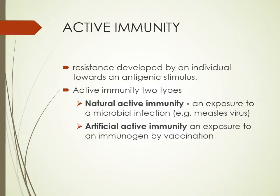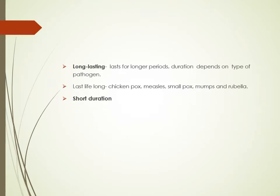Active immunity is of two types: natural and artificial. Natural active immunity means exposure to a microorganism activates your immune system, resulting in antibody formation. Artificial active immunity means a pathogen has been introduced artificially — as in vaccination, where we introduce part of the pathogen, killed or attenuated — and your immune system gets activated. In both cases your immune system is playing an active role. Depending on the type of pathogen, the immunity may be lifelong or short-term.